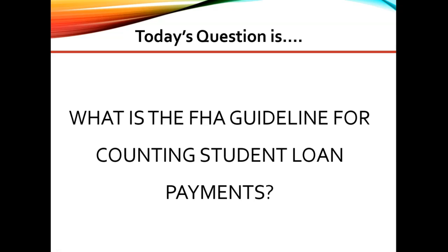Great question. And as a DE FHA underwriter, here are my thoughts. Regardless of the payment status, the mortgagee must use either the greater of 1% of the outstanding balance of the loan, or the monthly payment reported on the borrower's credit report, or the actual documented fully amortized payment.